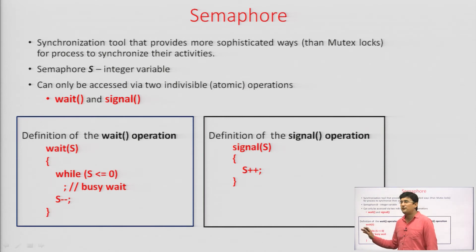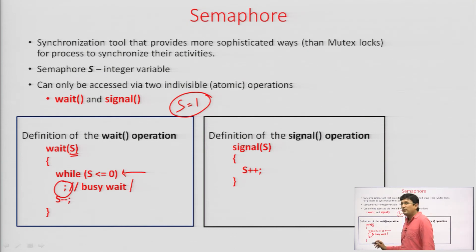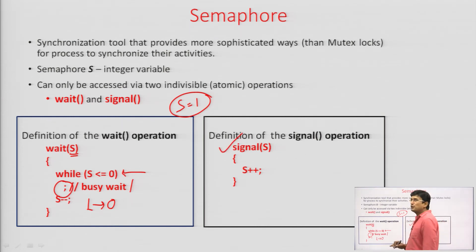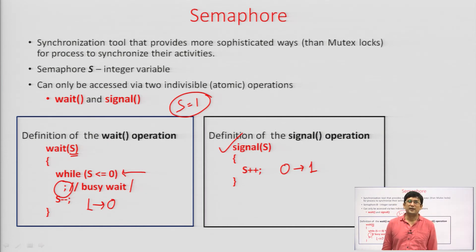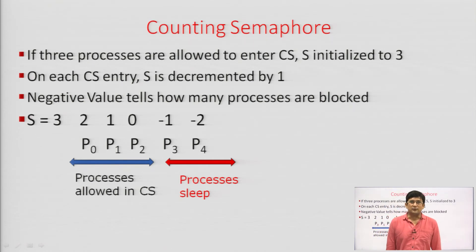Now let us deal with the counting semaphore without busy waiting. If the semaphore is initialized to 3, it means 3 processes can enter the critical section at the same time — say there are 3 printers and 3 processes can access them. Process P0 applies wait, reducing the semaphore from 3 to 2. P1 applies wait, reducing from 2 to 1. Since the semaphore is positive, P0 and P1 enter the critical section. P2 applies wait, reducing from 1 to 0, and also enters since the value was positive.